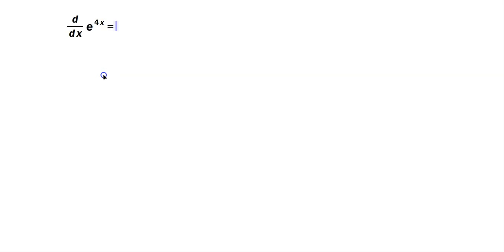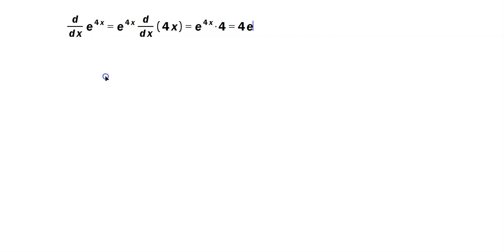Differentiate with respect to x, e raised to the 4x — you gotta use the chain rule. e to the 4x gets copied, then you multiply it by the derivative of the exponent, which is the 4x. That's gonna give you e raised to the 4x. The derivative of 4x is just 4, but convention goes at the front, so you have 4e raised to the 4x.